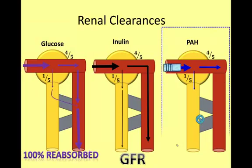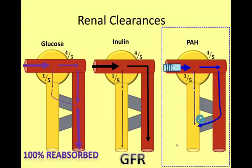PAH is the amide derivative of the amino acid glycine and paraaminobenzoic acid, and is used in diagnostic testing of the kidney. Like inulin and glucose, PAH is freely filtered at the glomerulus and one-fifth of the PAH passes into the tubule. At low concentrations, all the PAH is secreted in one pass through the peritubular capillaries. Consequently, the clearance of PAH can be used as a measure of renal plasma flow (RPF).